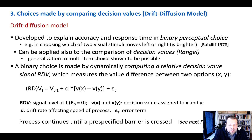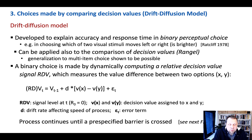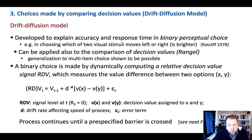The original developer is Ratcliffe, and it was developed in 1978 for simple tasks where one of two visual stimuli moves left or right. These are binary choice type experiments, but the model has been shown to apply to a wider range of choices, including tertiary choices with multiple alternatives.